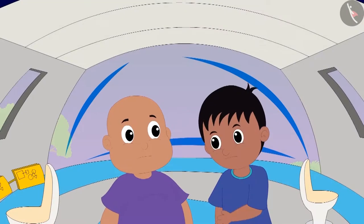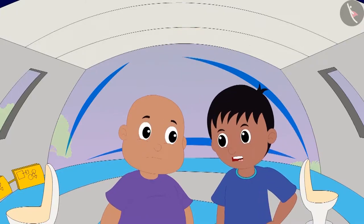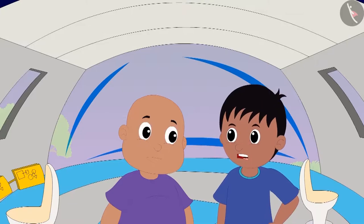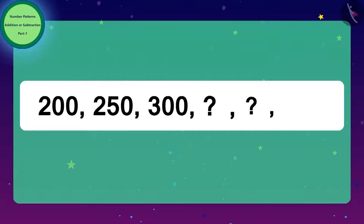Raju and Bablu saw a door in front of them on which the code was written. Raju told Bablu that he had solved Jeev's codes before. But these numbers were very large.